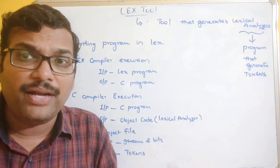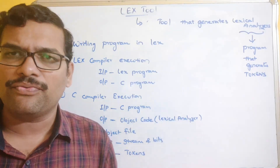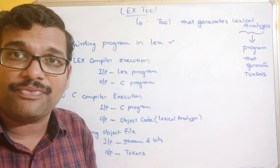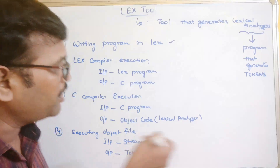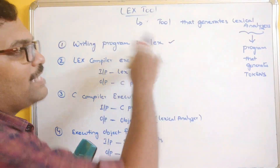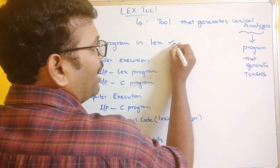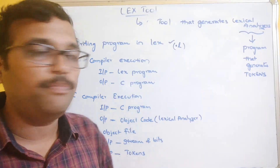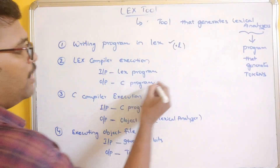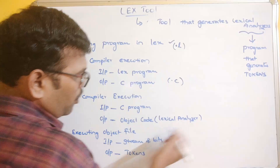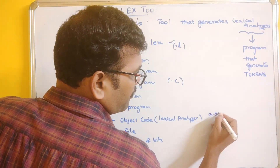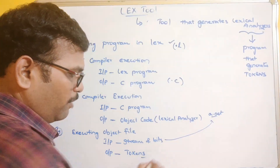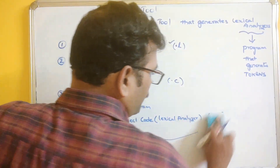The program is first written in LEX using text editors available in Linux, such as vi, BBEdit, or others. There is a structure for the LEX program which we will see further. The LEX language program has the extension dot-l, similar to how Java, C, and Python have their own extensions. The compiled C output will be dot-c, and the object code will be dot-out.